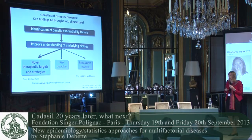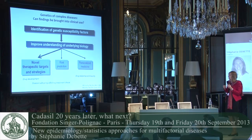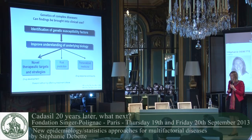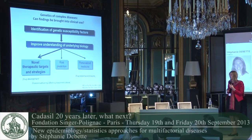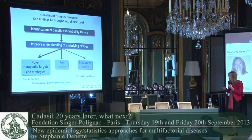What is expected from these findings? It will hopefully improve our understanding of the underlying biology, and this improved understanding could lead to novel therapeutic targets and strategies. This will probably be the biggest application, perhaps in some instances to better risk prediction, and also in some more limited situations to personalized medicine — taking into account genetic variation for drug response and toxicity.